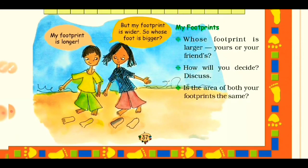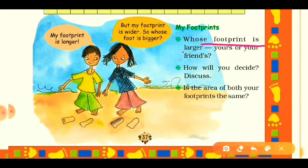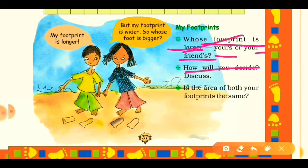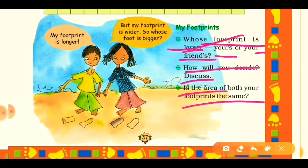Next question: whose footprint is larger — yours or your friend's? You can do the same squared-sheet activity to find the area of footprints. By observing and counting squares, you can determine which footprint has a bigger area. Also, are the areas of both your footprints the same? Yes — both legs are equal, so your footprints will also have equal areas.